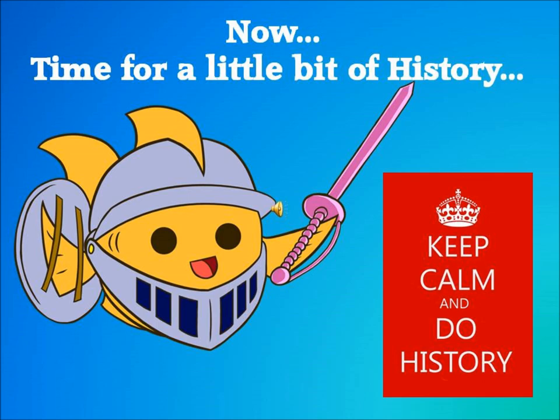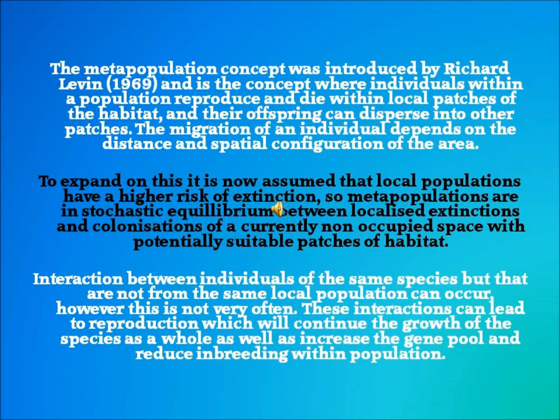The metapopulation concept was introduced by Richard Levin in 1969 and is the concept where individuals within a population reproduce and die within local patches of the habitat and their offspring can disperse into other patches. The migration of an individual depends on the distance and spatial configuration of the area.